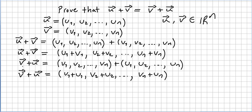And what is v plus u? That will be vector v first — (v1, v2, ..., vn) — plus vector u — (u1, u2, ..., un). So v plus u, adding components, will be (v1+u1, v2+u2, ...). But u1+v1 equals v1+u1 because these are numbers; they behave as in the reals.